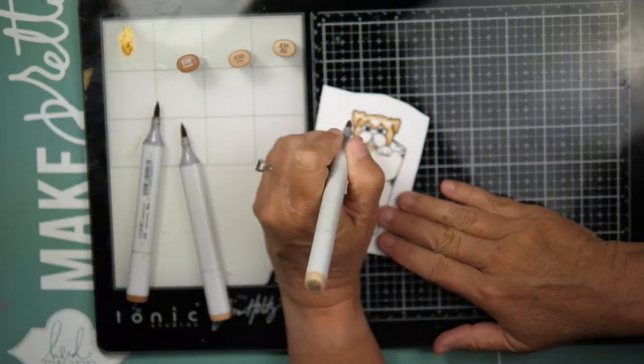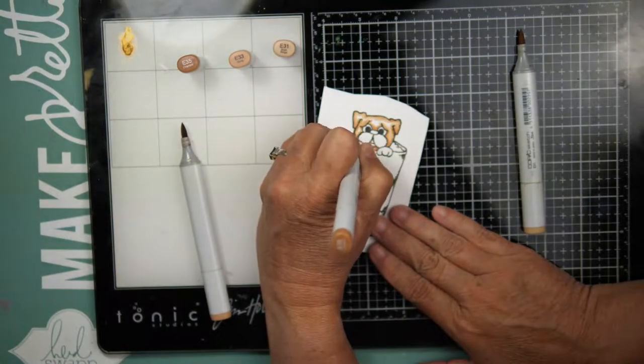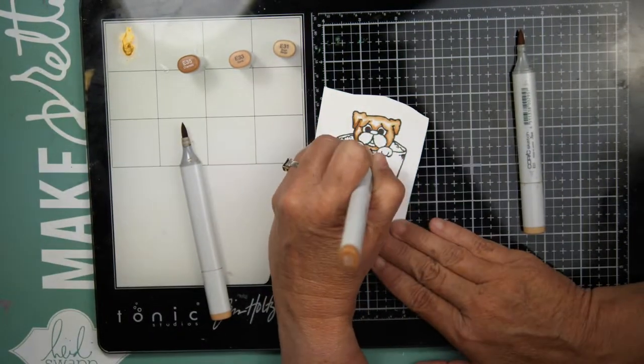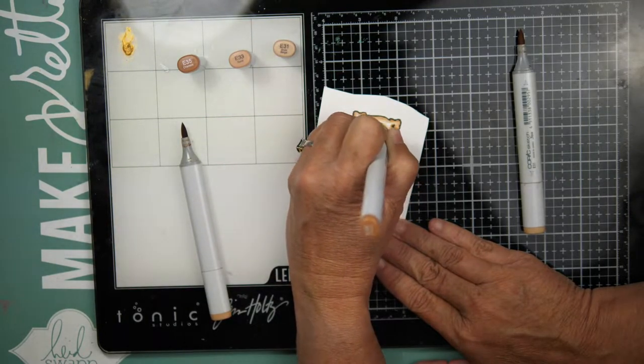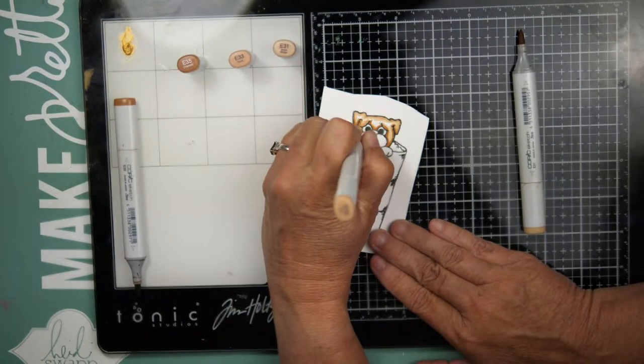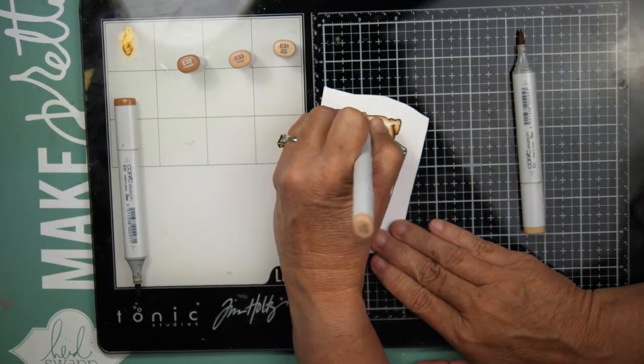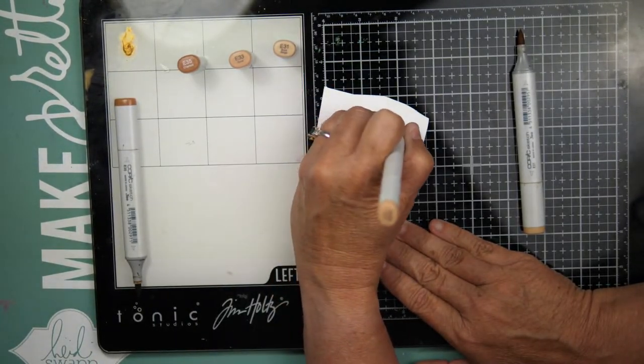And I go over the entire thing with my mid-tone, which would be E33. And then I'll come back in and add just a little bit more depth to that shadowing with the E35.